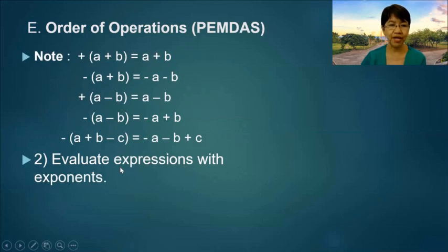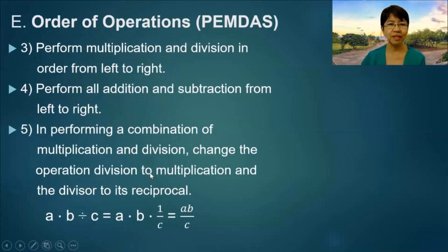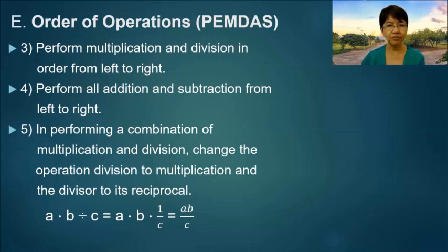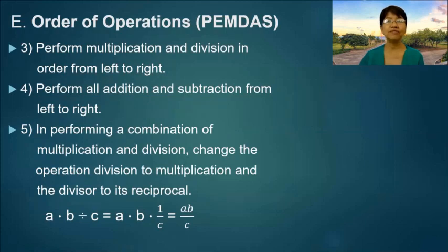Number two: evaluate expressions with exponents. Number three: perform multiplication and division in order from left to right. Number four: perform all addition and subtraction from left to right. Number five: in performing a combination of multiplication and division, change the division operation to multiplication and the divisor to its reciprocal.